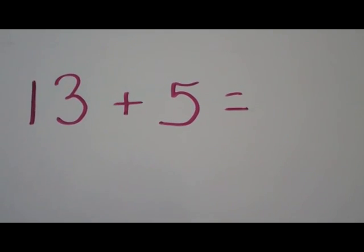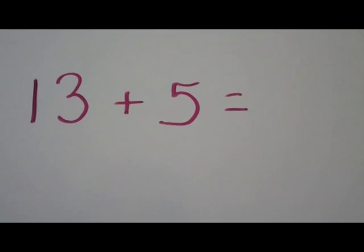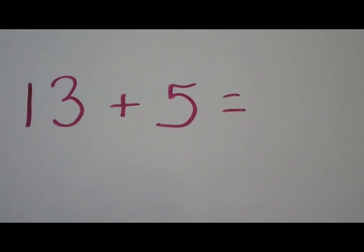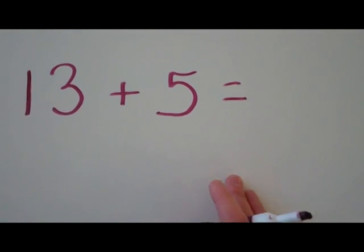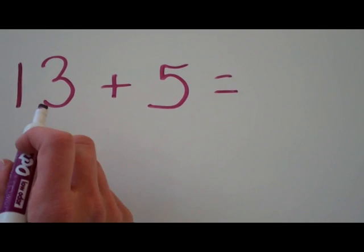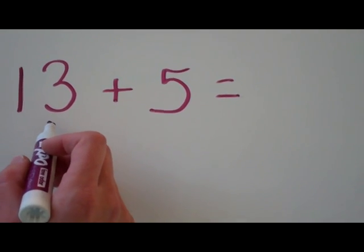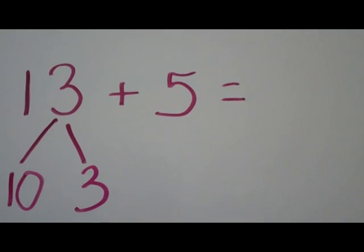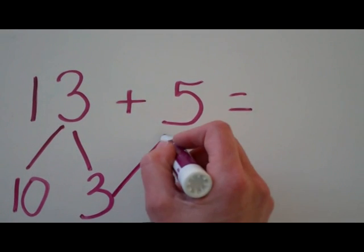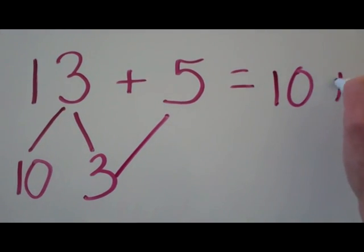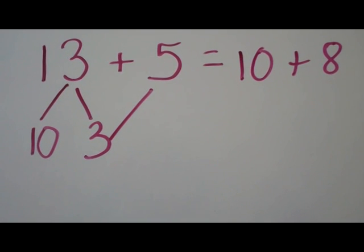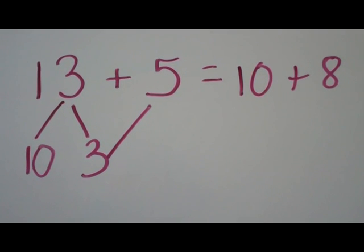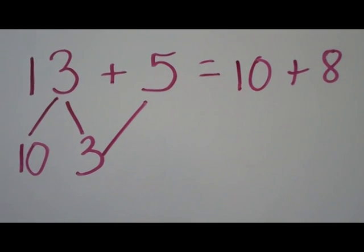We learned that addition and subtraction facts within 20 can be done different ways mentally. One of the ways is you look at your two numbers and separate this out into tens and ones so that you now can put your ones together. Basically you're mentally turning that into 10 plus 8. You're taking the three, the ones, away from the tens group and adding it to the other ones.